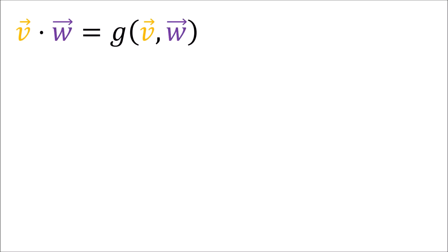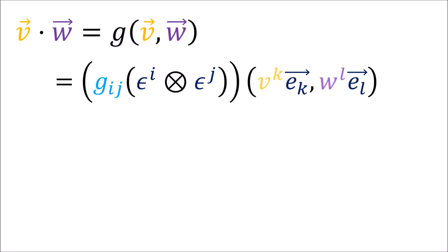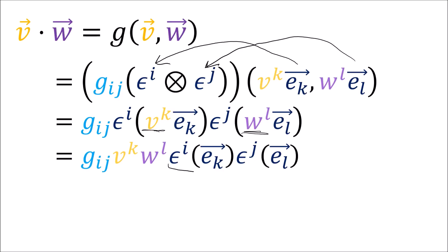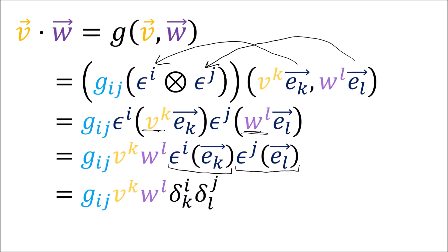When we want to compute v dot w, which equals the metric tensor acting on v and w, we expand g, v, and w into their linear combinations. Then we pass these vectors to the tensor product of covectors. Since the covectors are linear we can take out the scalar constants, and these become Kronecker deltas by definition. Finally, we use the index cancellation rule for Kronecker deltas to get the final formula for the dot product of v and w.